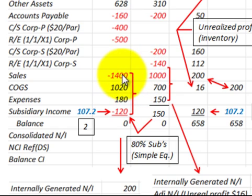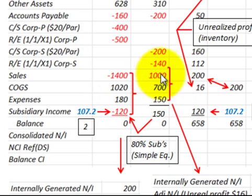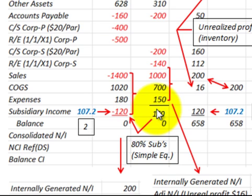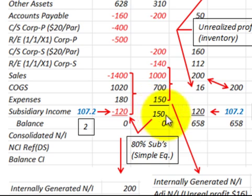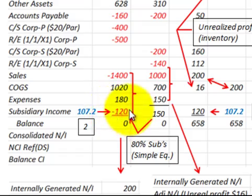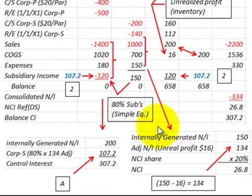Looking at our trial balance for the parent corporation and the subsidiary corporation — for the parent's portion of the subsidiary's income using the simple equity method, we take sales, subtract cost of goods sold and expenses, and get a net income of $150,000. The parent had 80% ownership, so we take 80% of the subsidiary's income of $150,000, recording the parent's portion at $120,000.